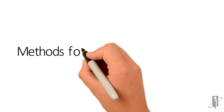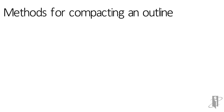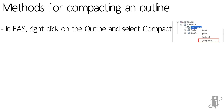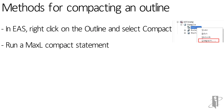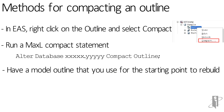So what are the methods for compacting an outline? First, we could go into EAS and right mouse click on the outline and select compact. Or we could run a MaxL compact statement, like 'alter database [application database name] compact outline.' We could have a model outline that you use to build from scratch. Or you can run S-Command-Q.